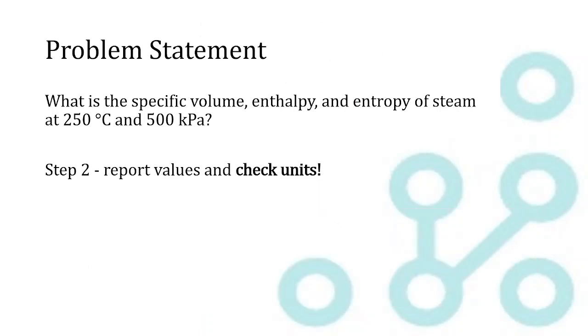And the final step is just reporting values and checking our units. So our specific volume, we've divided the value in the table by 1,000 to get 0.47432 cubic meters per kilogram. Our specific enthalpy is 2,960.1 kilojoules per kilogram. And our specific entropy is 7.2699 kilojoules per kilogram Kelvin.